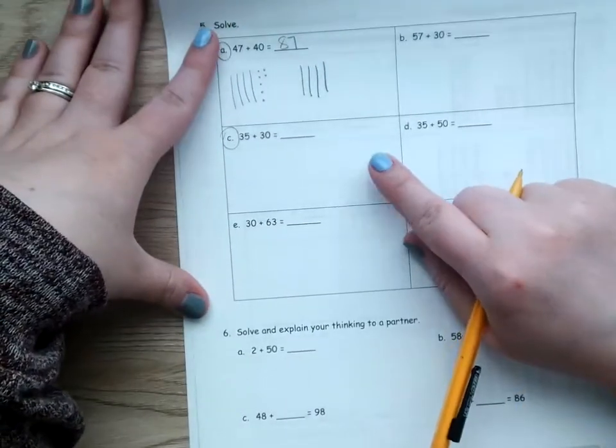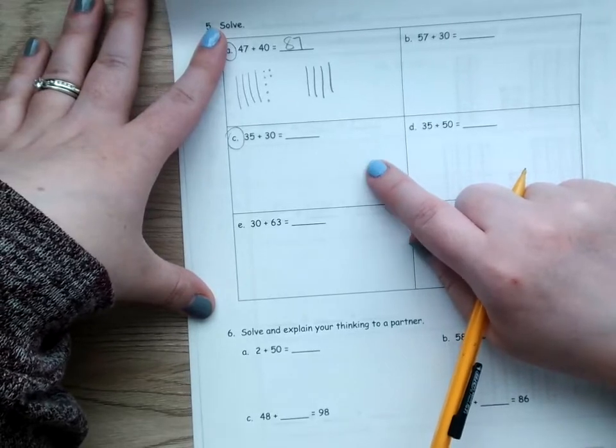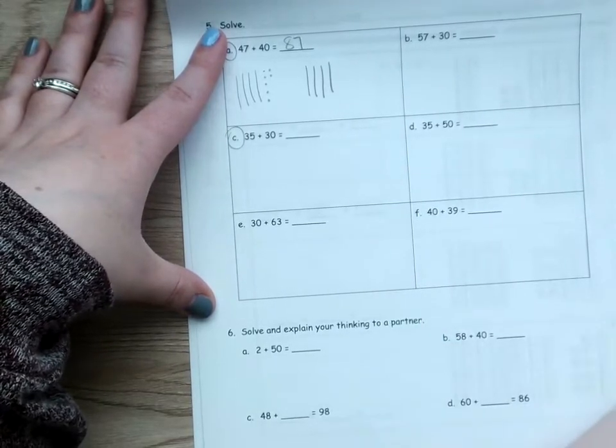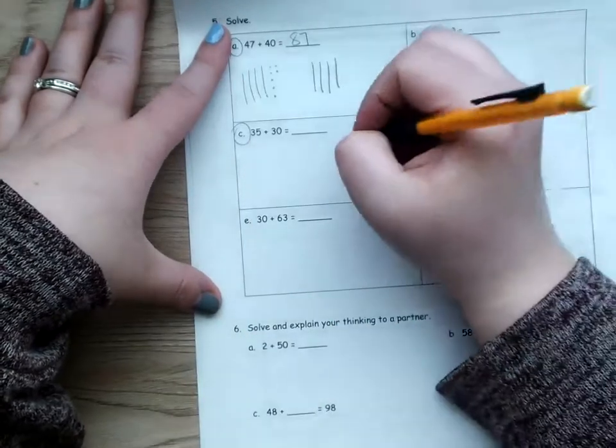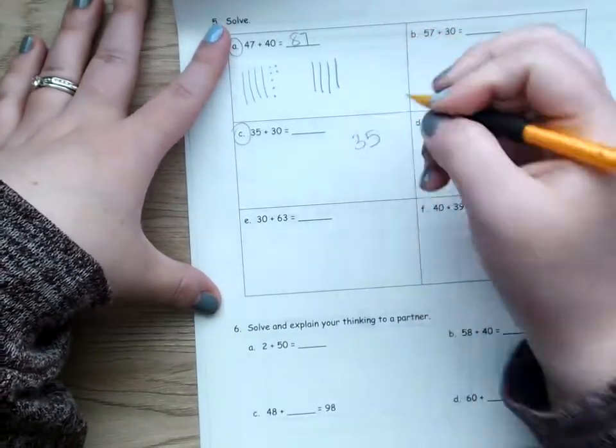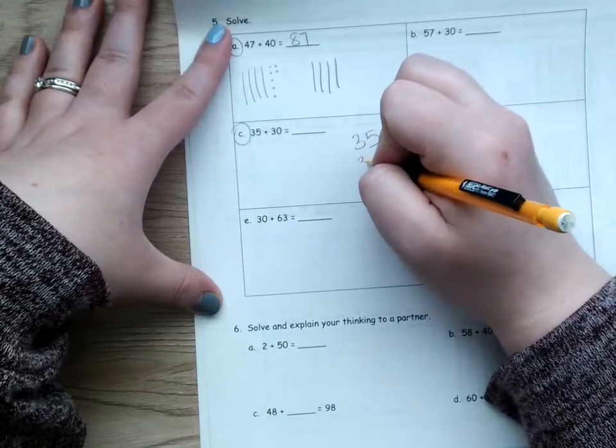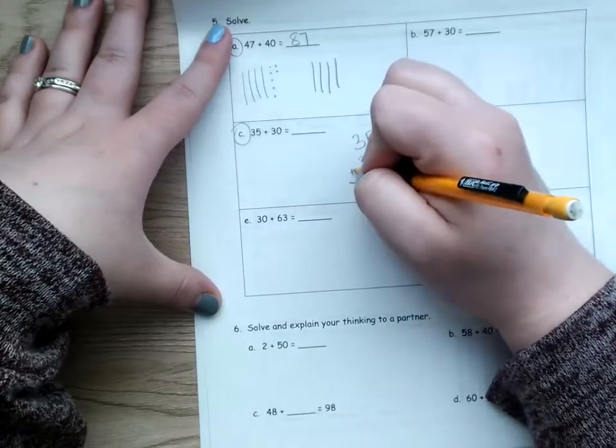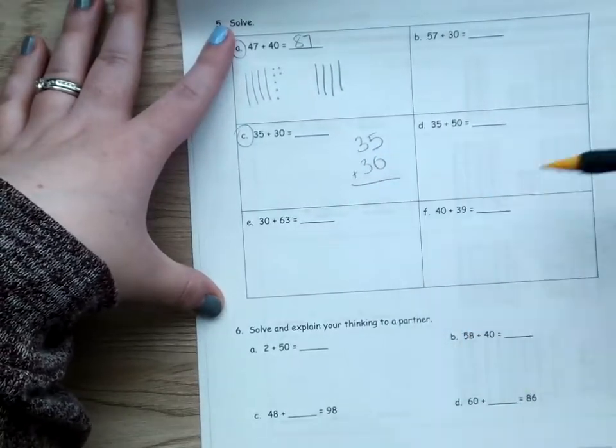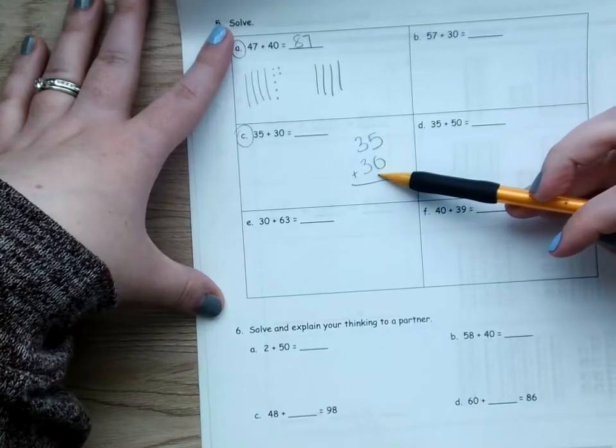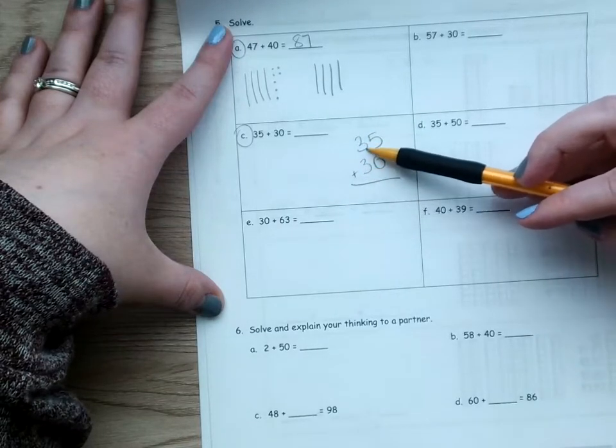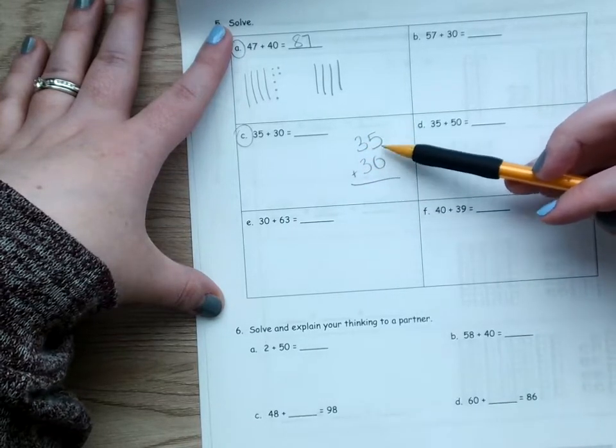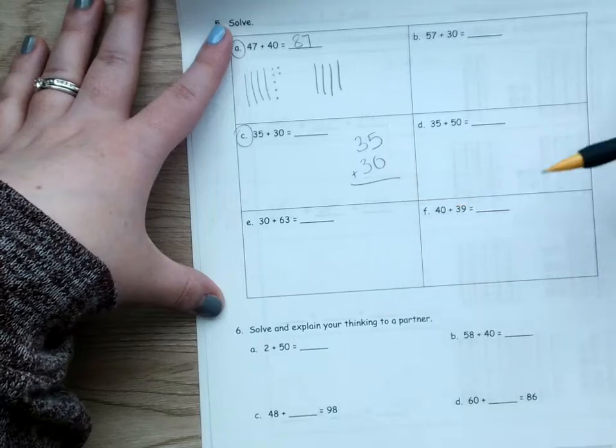The other way I really like to solve these problems is to line them up like I was showing you on the front. So, I've got 35 and I've got 30. Now, notice when I say line them up, these numbers are right on top of each other. Right? The first number, the first digit in our number is lined up together. And, the last digit in our number is lined up together.